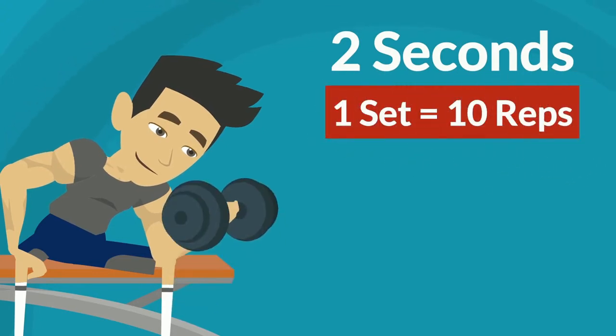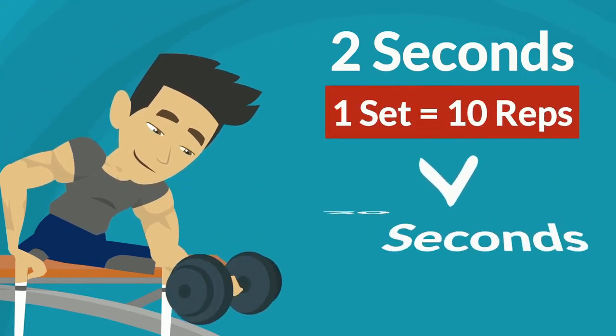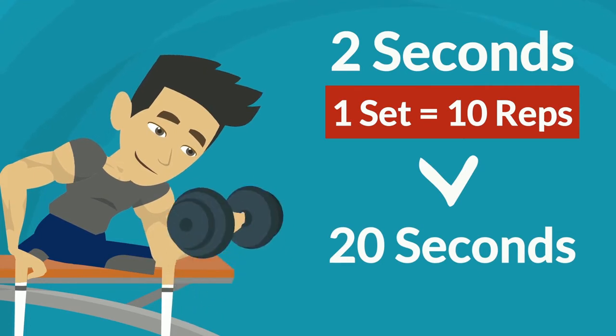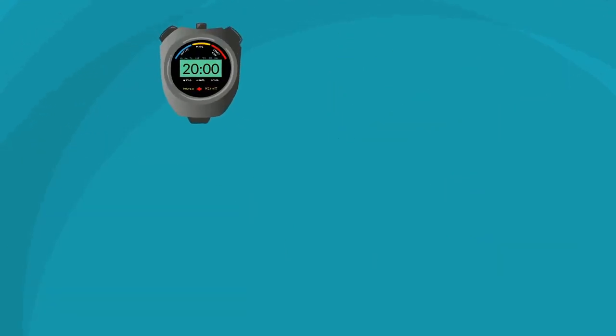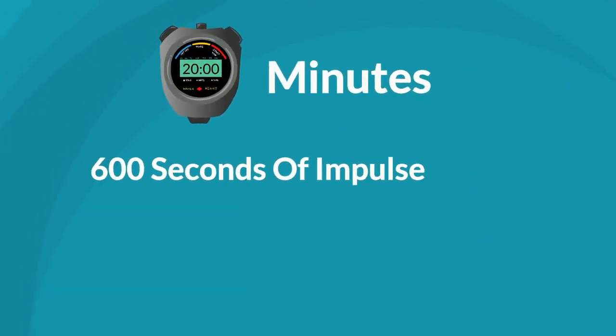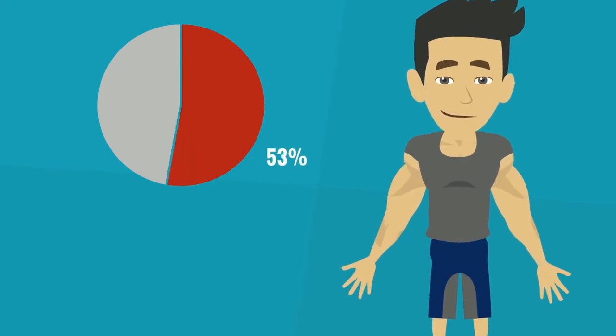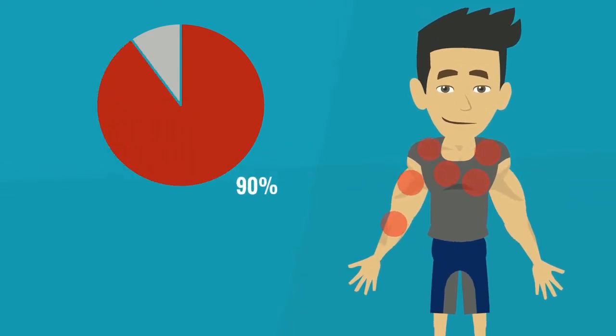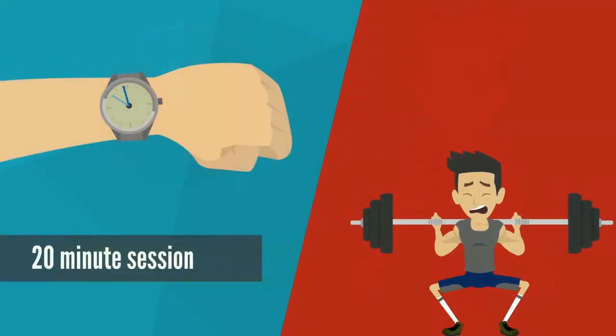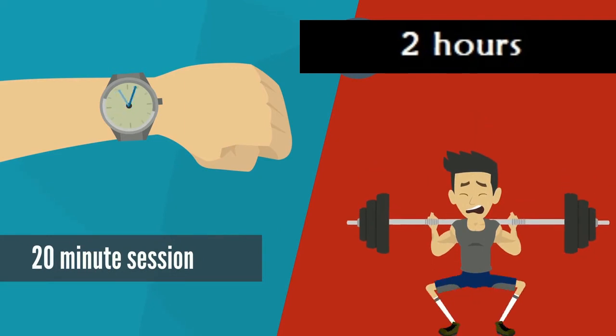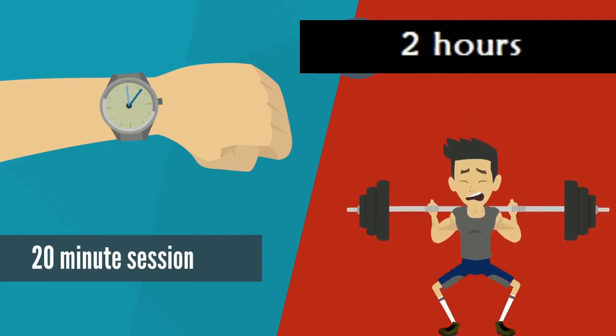When you lift a dumbbell up, it takes approximately 2 seconds. And with one conventional set equating to 10 reps, this equals 20 seconds. Within the 20 minutes of your EMS training, your bicep will have 600 seconds of impulse. That's 30 sets of your bicep curls. Now imagine, 90% of your body being activated simultaneously. That's an impressive total of 300 sets. So in simple terms, this 20-minute session gives you a whole lot of weight in your regular gym.